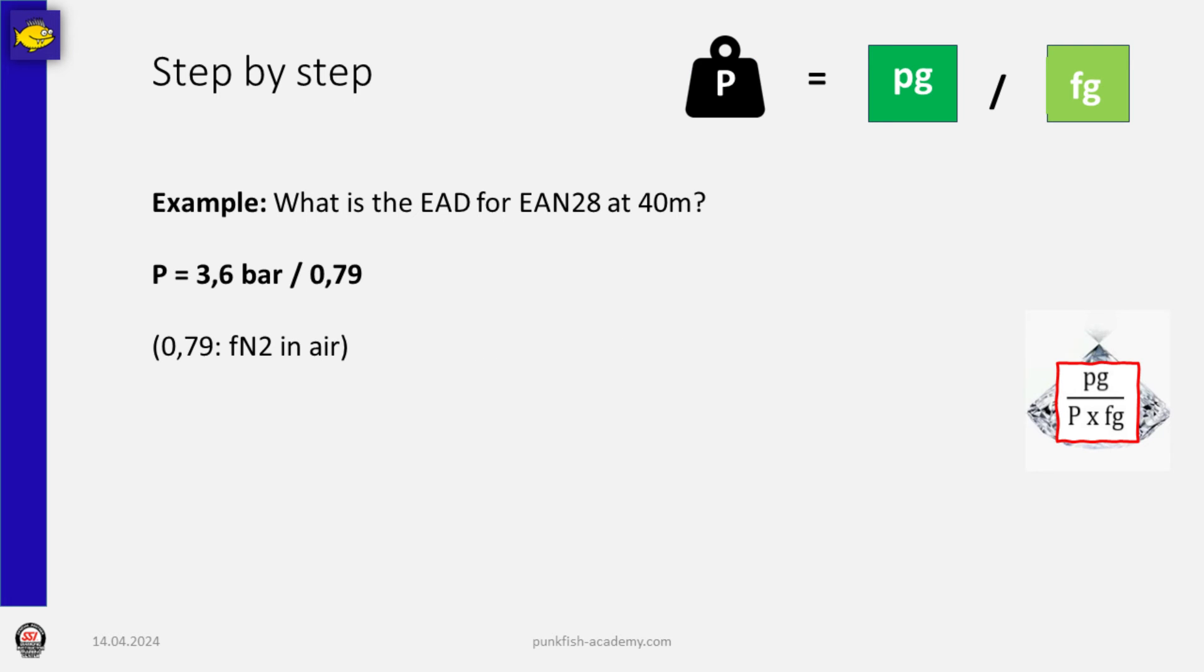Now this 3.6 bar partial pressure of nitrogen is what we want to compare. Because what we want to know is at which depth do we reach a nitrogen pressure of 3.6 bar when we dive with air. This is our equivalent air depth. This is what we are looking for.